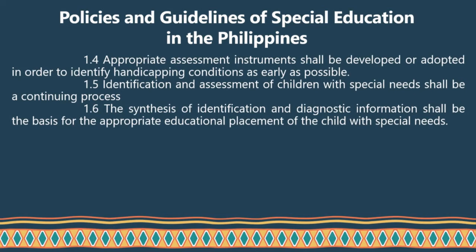Appropriate assessment instruments must be developed or adopted in order to identify handicapping conditions as early as possible. Identification and assessment of children with special needs shall be a continuing process. There must be a re-evaluation of the IEP to test its effectiveness. The team must ensure how to constantly secure the IEP's effectiveness for the child. The synthesis of identification and diagnostic information shall be the basis for the appropriate educational placement of the child with special needs.